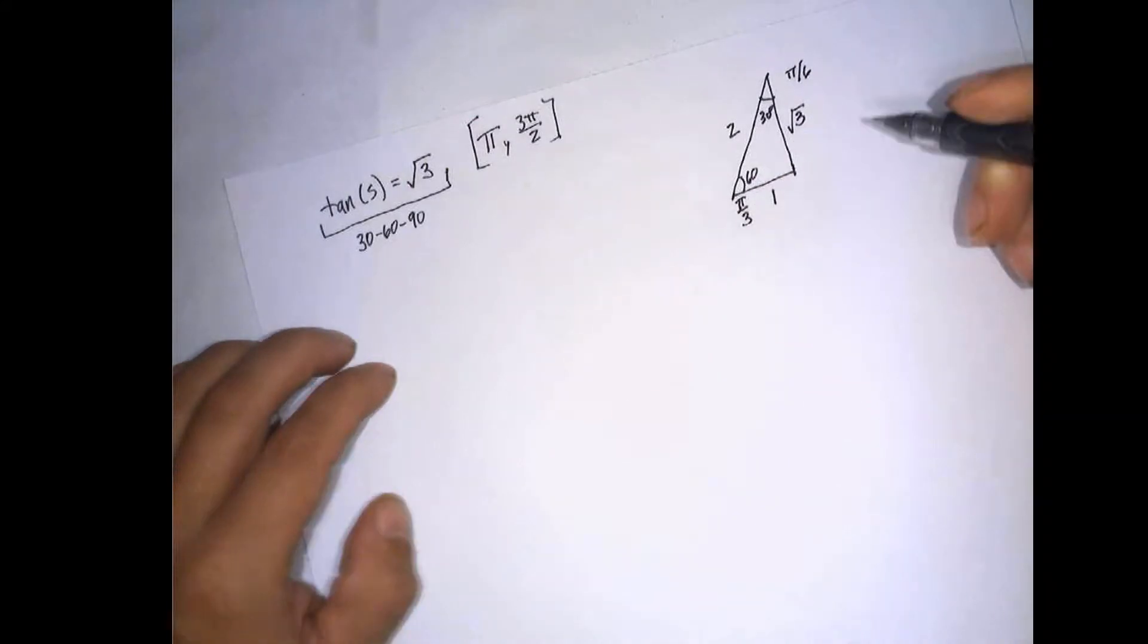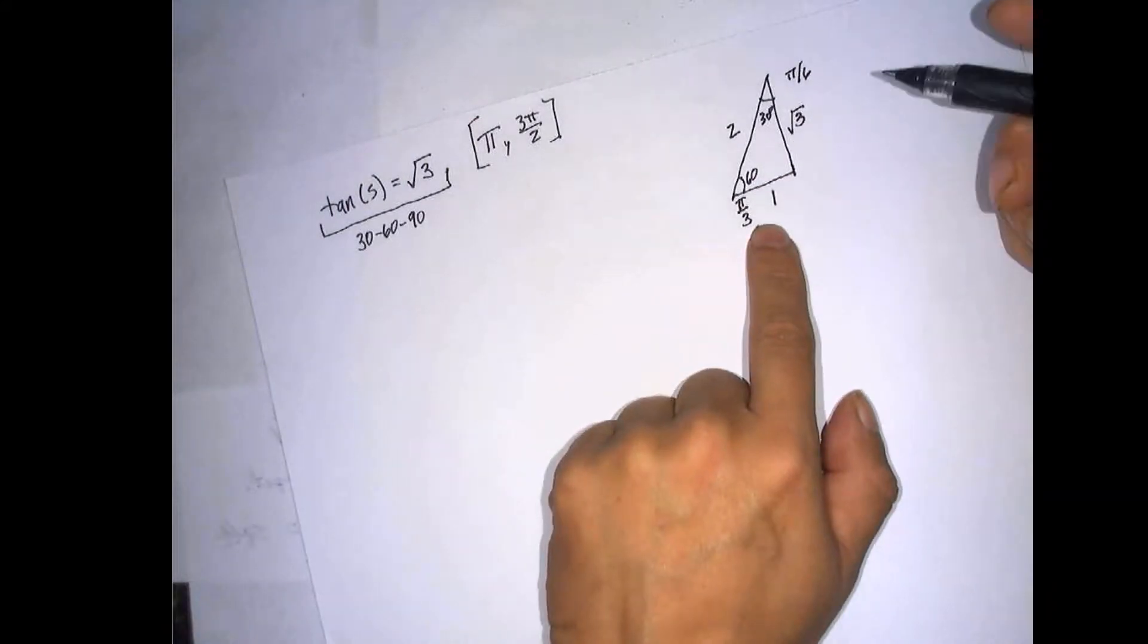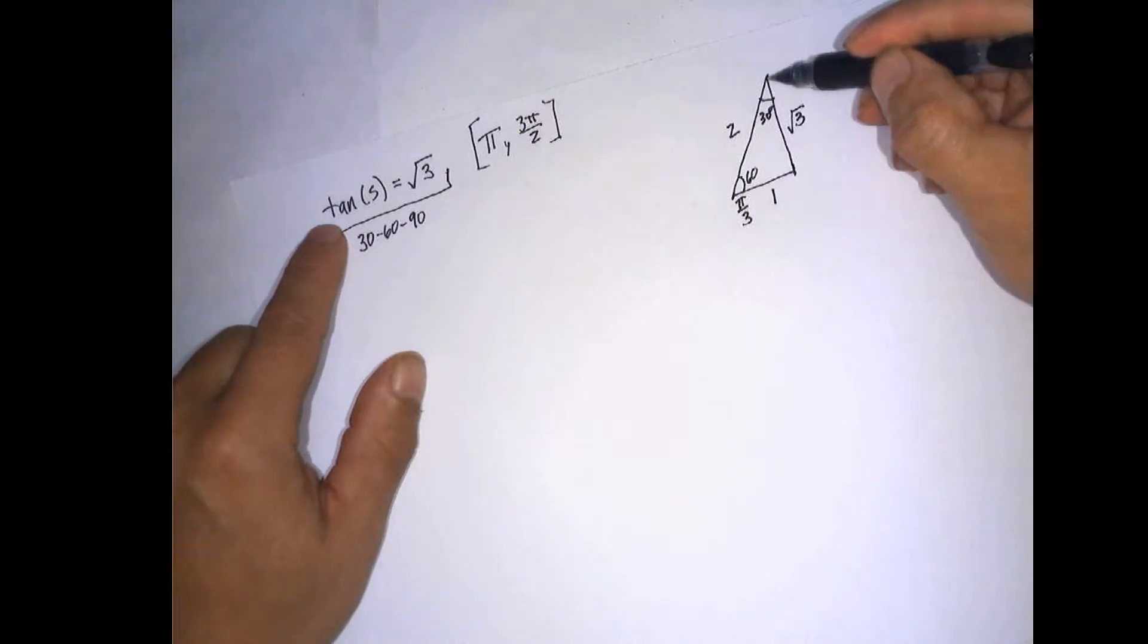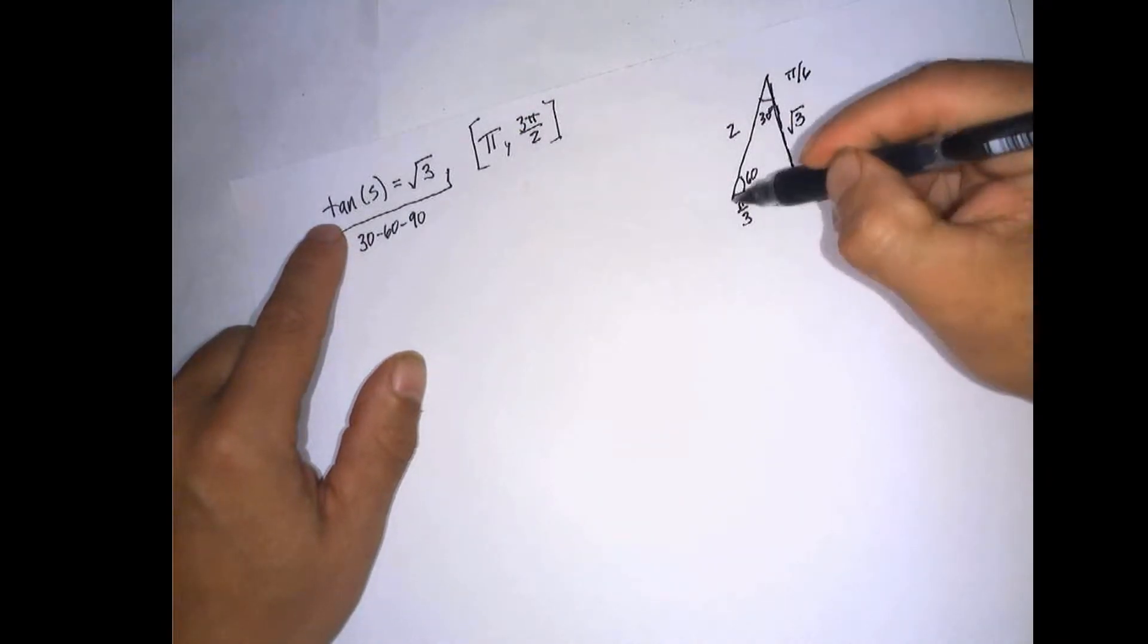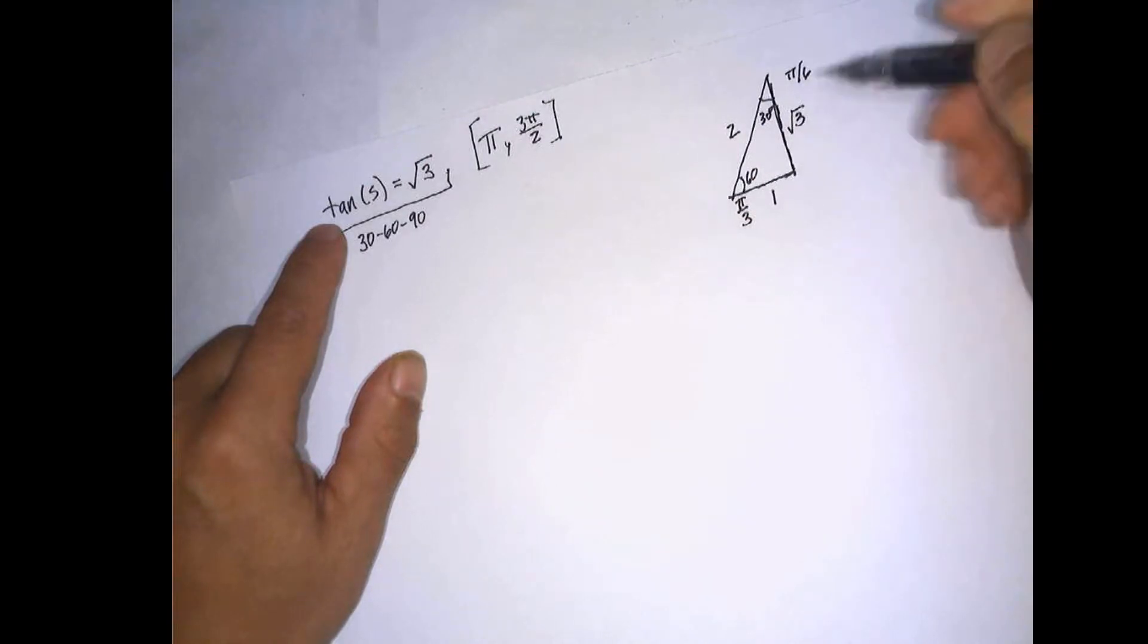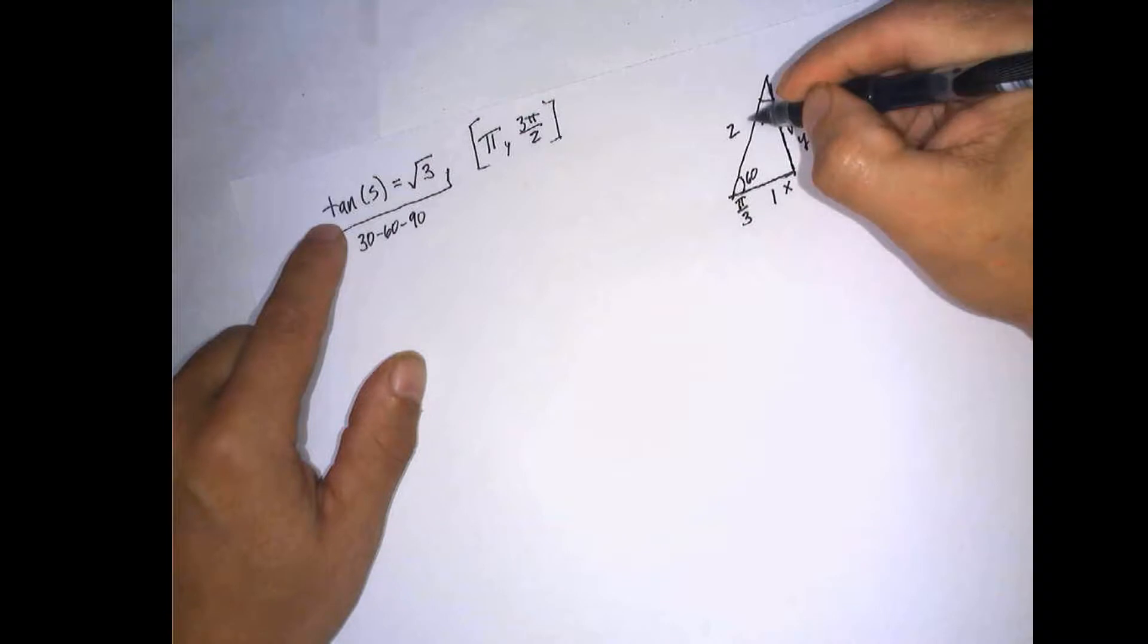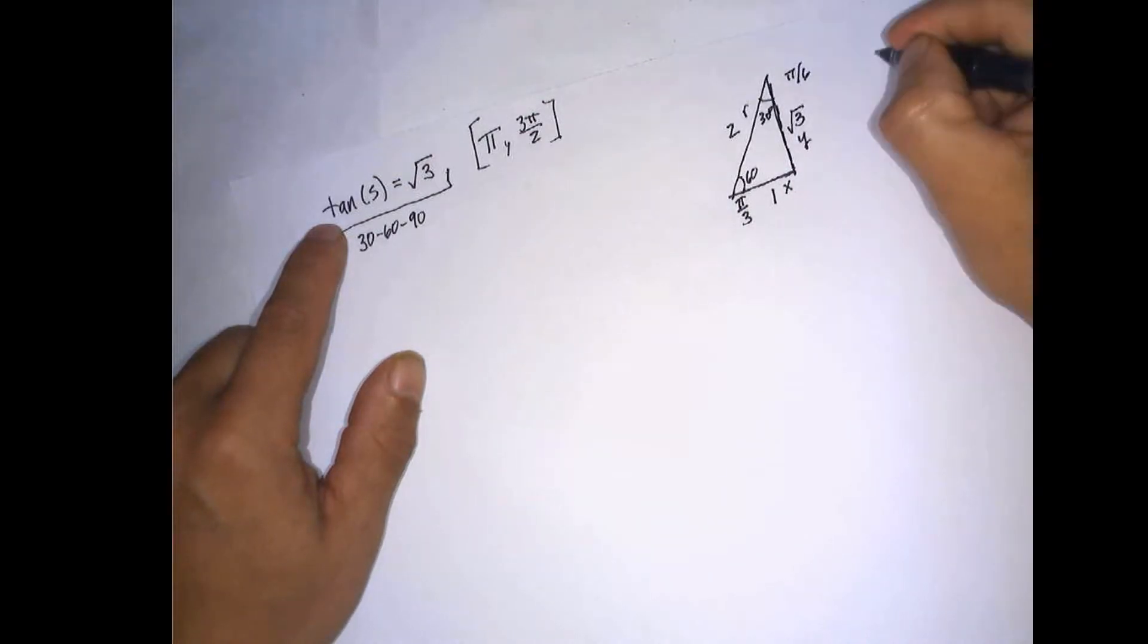Okay, so that tells you that you're dealing with this kind of triangle, and of course we're looking for the tangent. So the tangent is the opposite over the adjacent. So if this is y, and this is x, this is r. So we're looking for y over x.